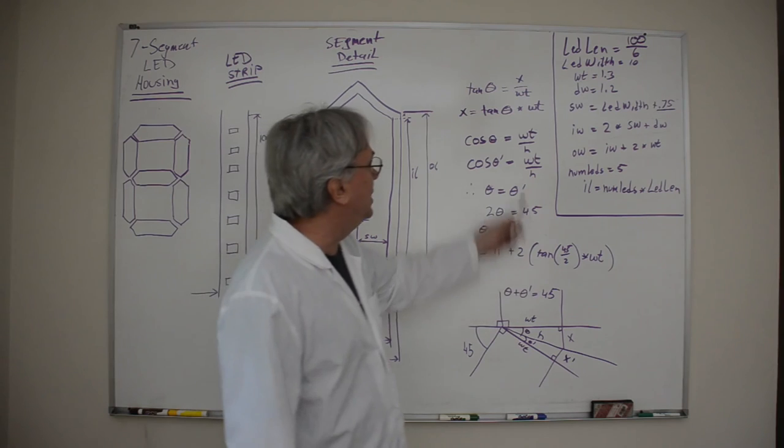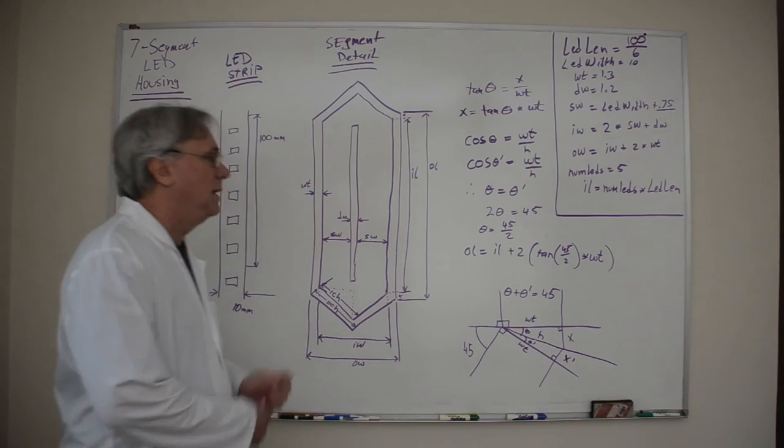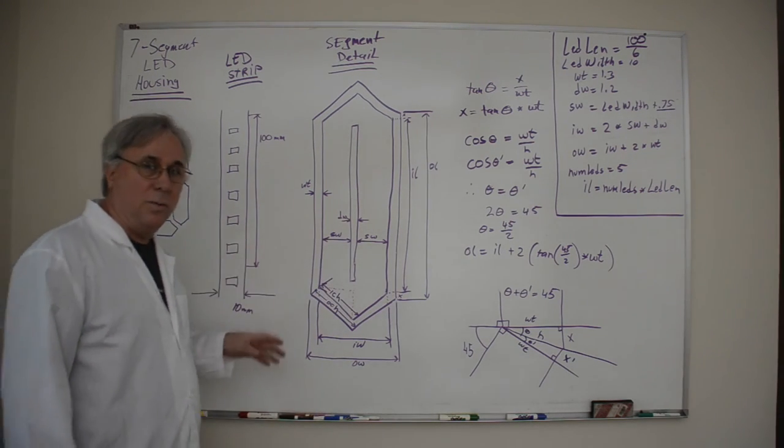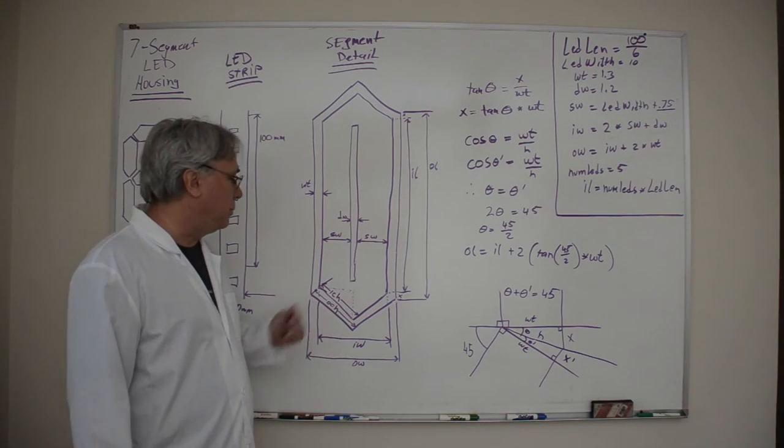You end up with OL equals IL plus 2 times the little x which is tangent 45 over 2 times WT. Now that we have all these values we know all these dimensions, we can open up OpenSCAD, code this geometry up, render it and print it out.